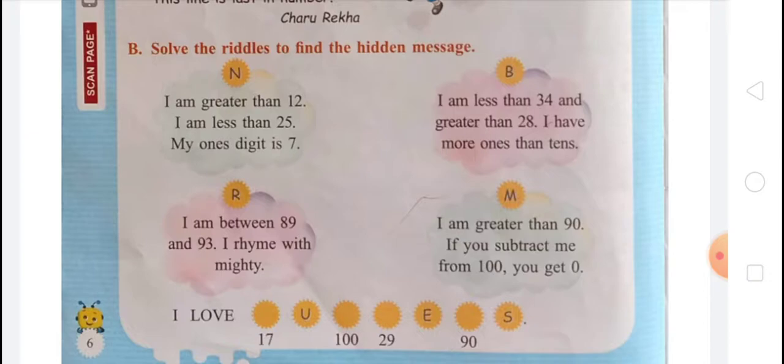The numbers that are greater than 12 and less than 25 are 13, 14, 15, 16, 17, 18, 19, 20, 21, 22, and 23. And my ones digit is 7. So the number is 17, because in 17, the digit 7 is in the ones place.